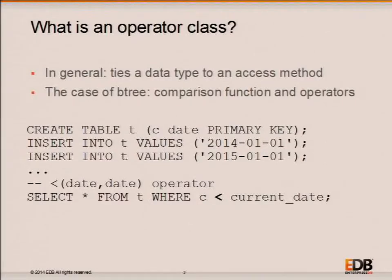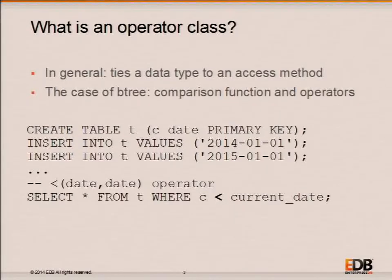For most of this talk, I'll be focusing on the Btree index access method, which is the most prominent. It's the default if you issue a CREATE INDEX statement without specifically naming a different index access method. It's also the only one that supports uniqueness, so it's the only one used in primary key constraints and unique constraints at this time. If we have some extra time at the end, I'll go into a couple of other access methods.